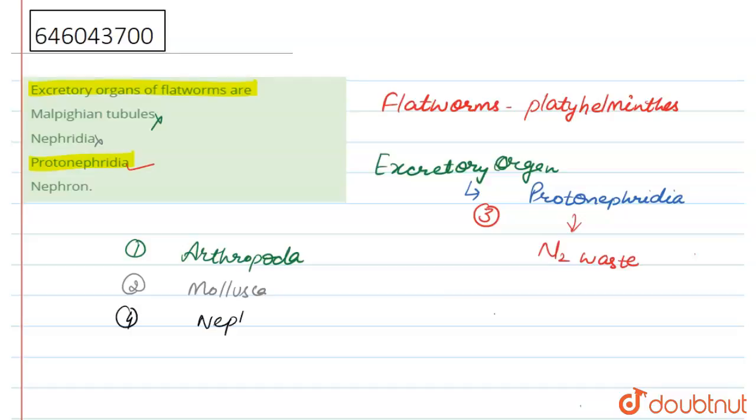In human beings, nephron is present in the kidney and is responsible for excretion. So this one is also wrong. The right answer is option third only, and that is protonephridia.